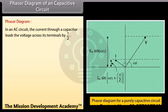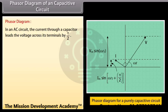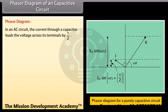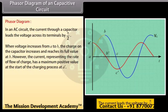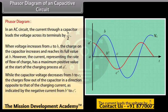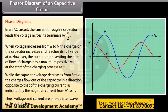Phasor diagram of a capacitative circuit: in an AC circuit, the current through a capacitor leads the voltage across its terminals by π/2. When voltage increases from A to B, the charge on the capacitor increases and reaches its full value at B. The current has a maximum positive value at the start of charging at A. When capacitor voltage decreases from B to C, charges flow out in the opposite direction, giving negative current. Thus voltage and current are one quarter wave cycle out of step.